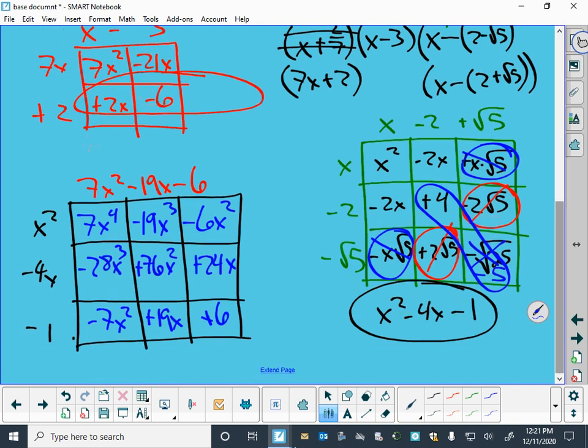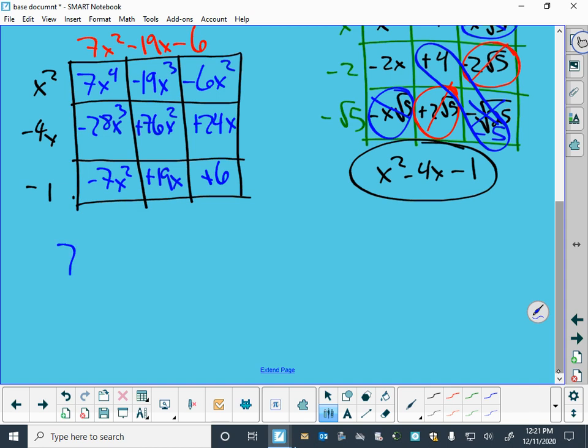And so, if I combine all of those things, I get a 7x to the fourth minus 19 minus 28 is minus 47x cubed. 76 minus 6 is 70 minus 7 is plus 63x squared. 19x and 24x sounds like a 43x plus 6. And this is my polynomial that I was looking for.